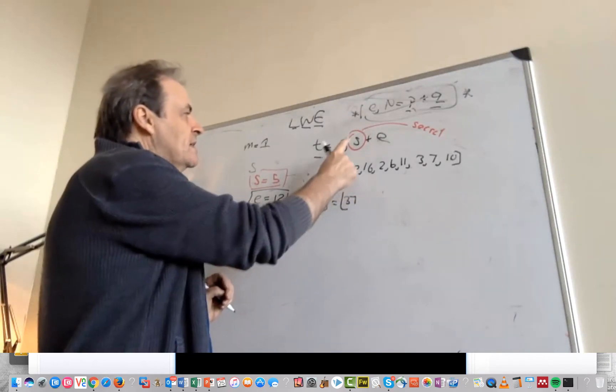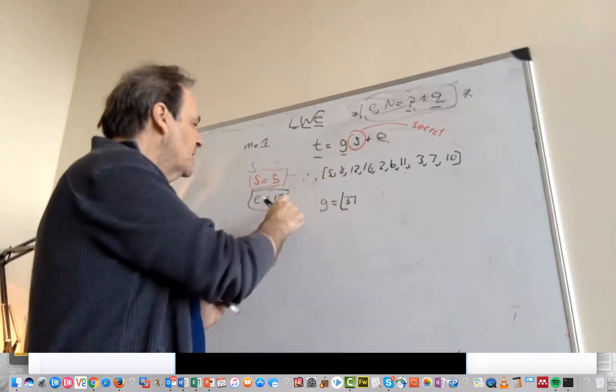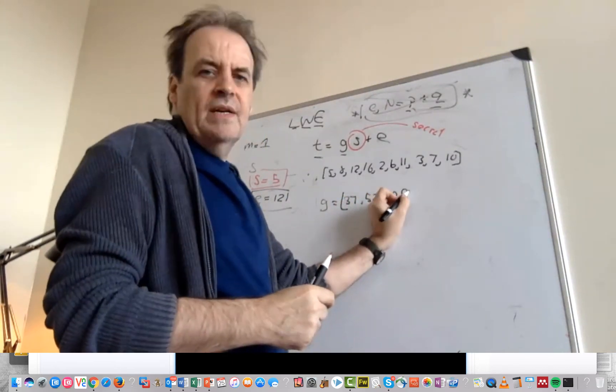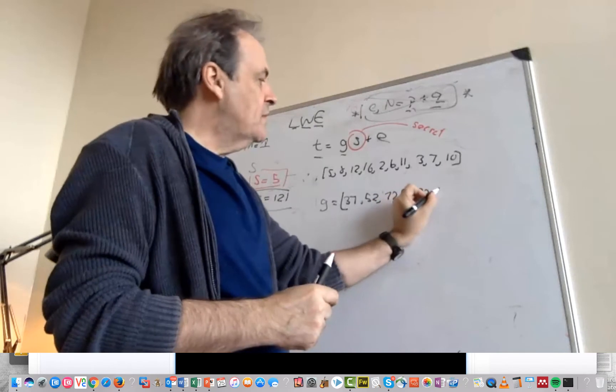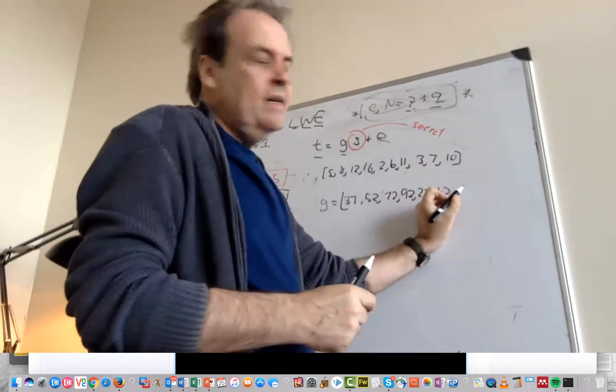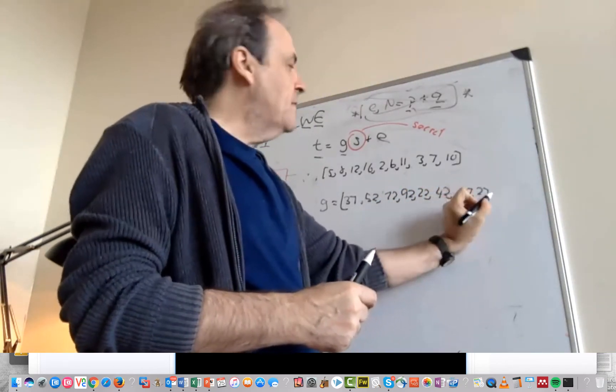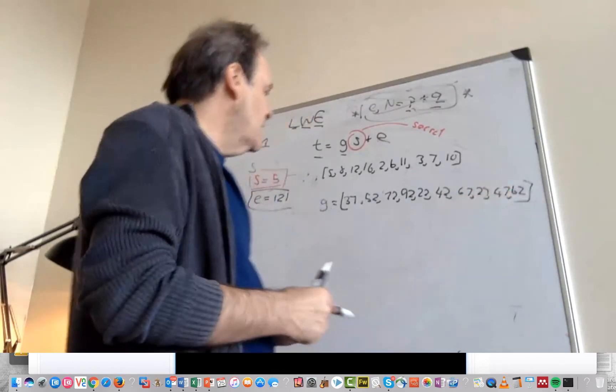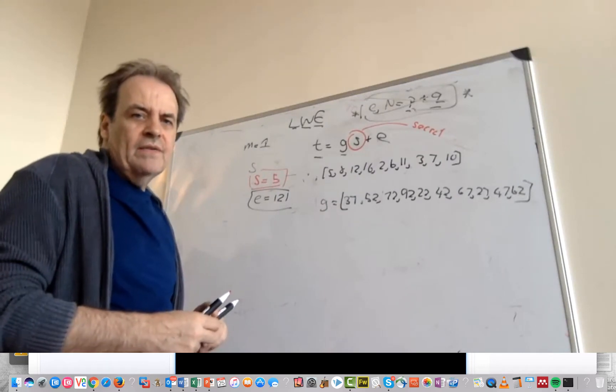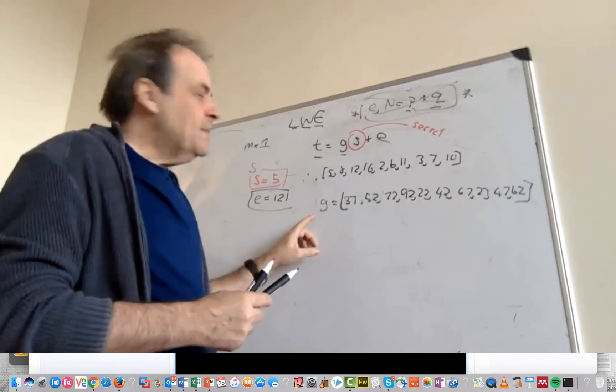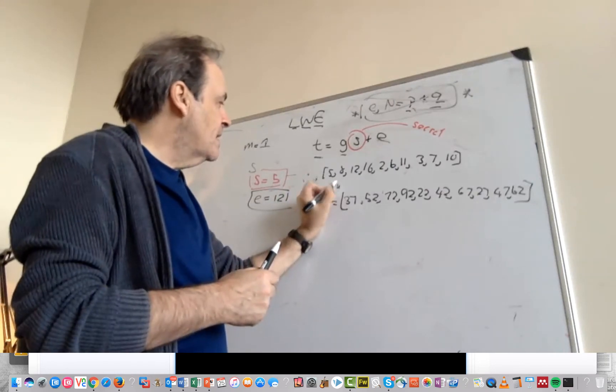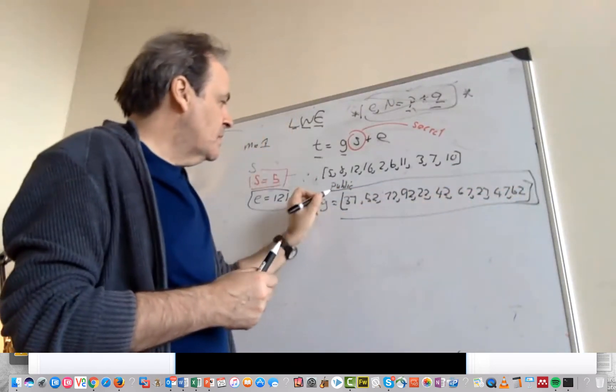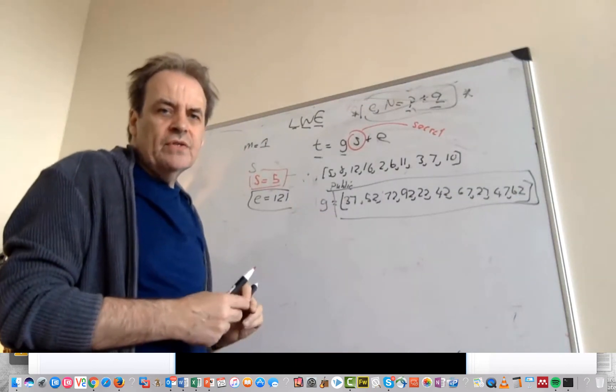And we'll take 8 times 5 which is 40, 52 and so on. So the next ones are 72, 92, 22, 42, 67, 27, 47 and 62. So this is the values that we get for our public key.